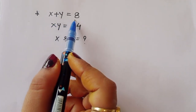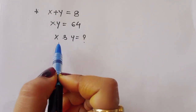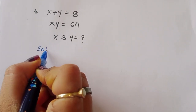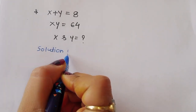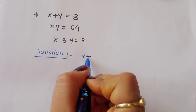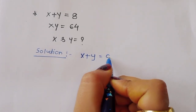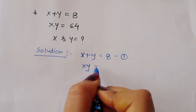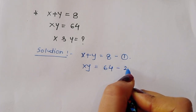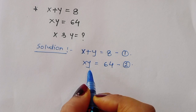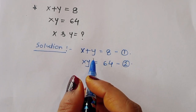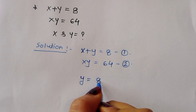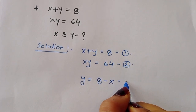The question is: given x plus y is equal to 8, and x y is equal to 64, we have to find out the value of x and y. Let's see the solution. First, what is given: x plus y is equal to 8 — this is equation number 1. Next, x y is equal to 64 — this is equation number 2. From equation 1, y is equal to 8 minus x — this is equation number 3.